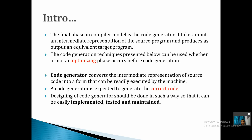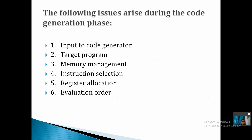Whether the code optimization is done or not, the code generation is going to happen. The code generator converts the intermediate representation of the source code into a form that is readily executable by the machine. The code should be easily implemented, tested, and maintained. The issues in code generation are: input to code generation, target program, memory management, instruction selection, register allocation, and evaluation order.